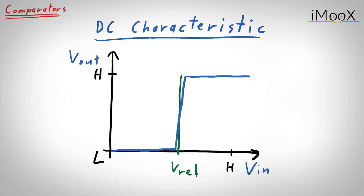However, as nothing is ideal, also the real characteristic of a comparator will look slightly different. In fact, it will look like this. The steepness is roughly defined by the open loop gain of the comparator. The higher the open loop gain, the steeper the curve. Nevertheless, we are still left with a range that we will call delta V in, where the input voltage is not clearly mapped to either a high or a low output level.